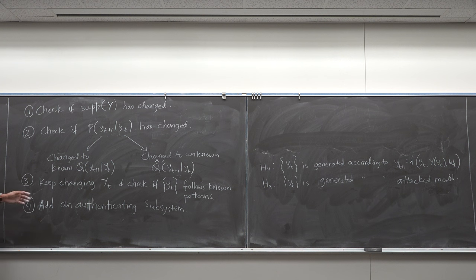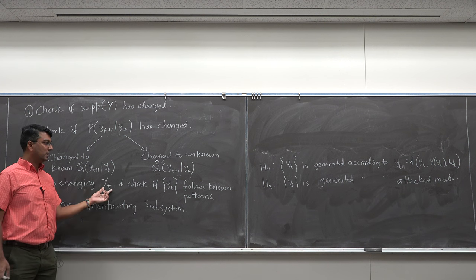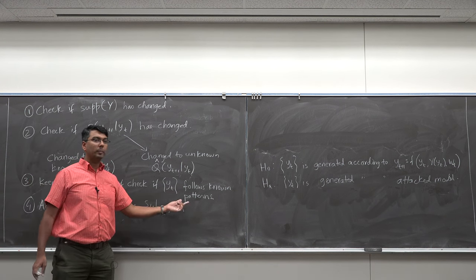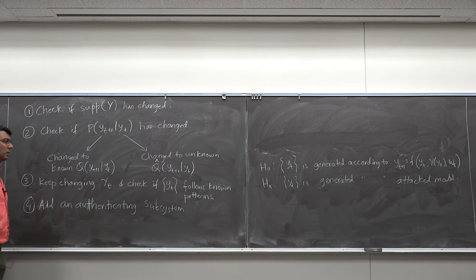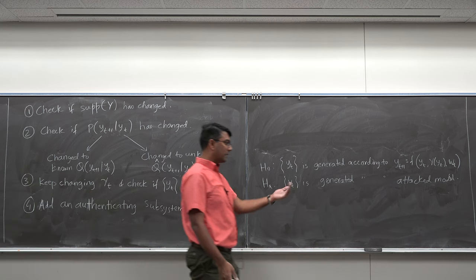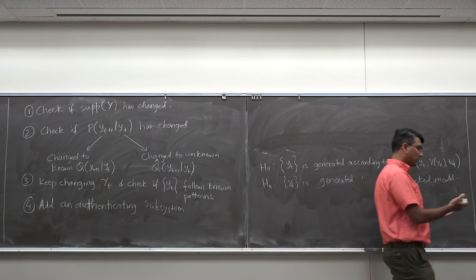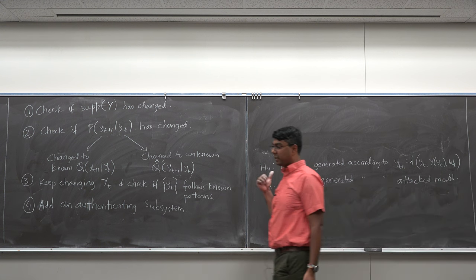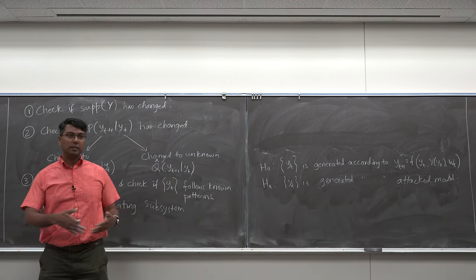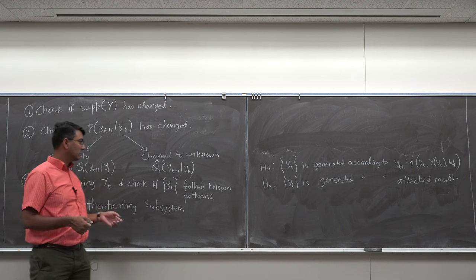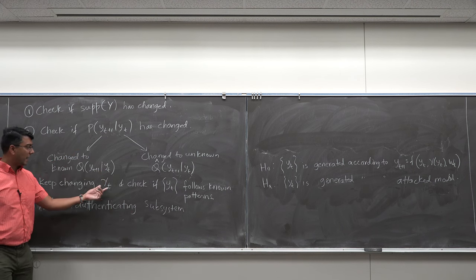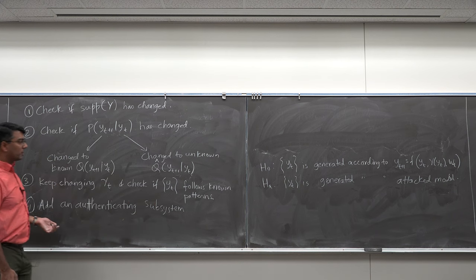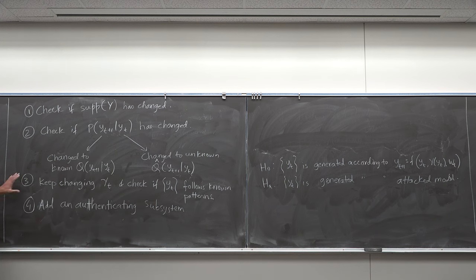The third method is to keep changing the policy gamma T and check if yt is following the pattern it should under different policies. For example, if I walk toward a chair and the chair comes nearer, then I move the opposite direction and the chair moves away — I know this is the real world. This approach is called dynamic watermarking, and involves changing gamma T and checking if yt follows known patterns.